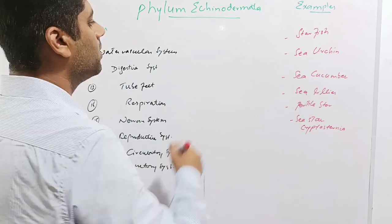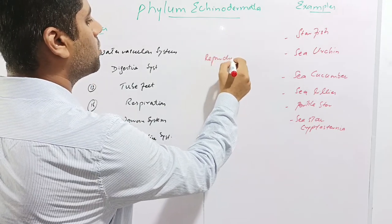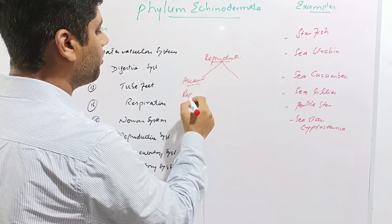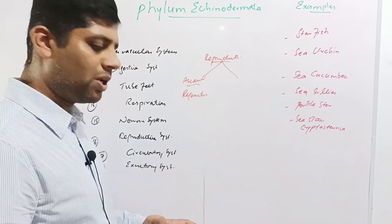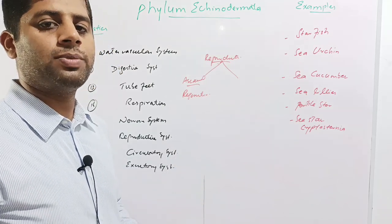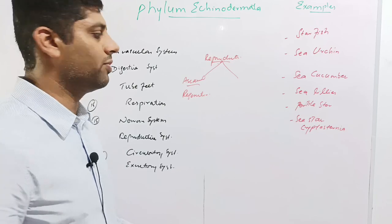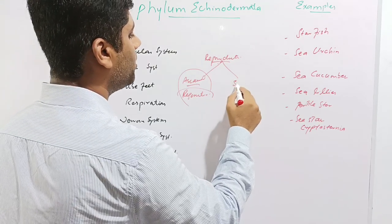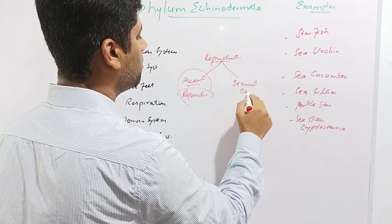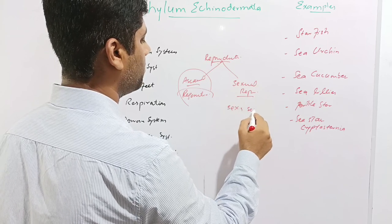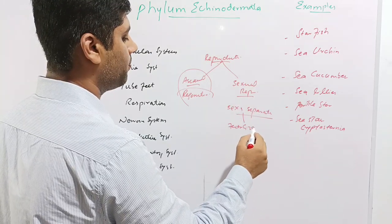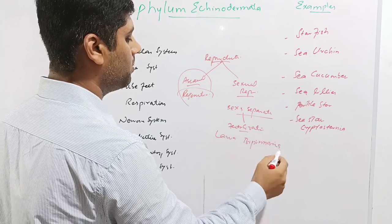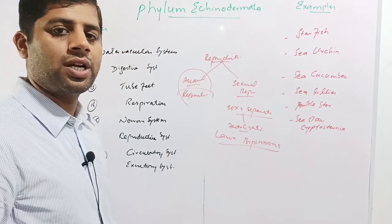Echinoderms show both modes of reproduction. In asexual reproduction, they have a remarkable power of regeneration — a small fragment of tube feet with a small fragment of the central disc can constitute another starfish. In sexual reproduction, the sexes are separate and fertilization is external. The larva is called bipinaria larva because it shows bilateral symmetry.